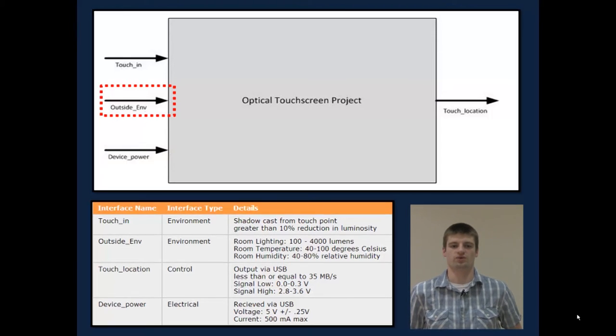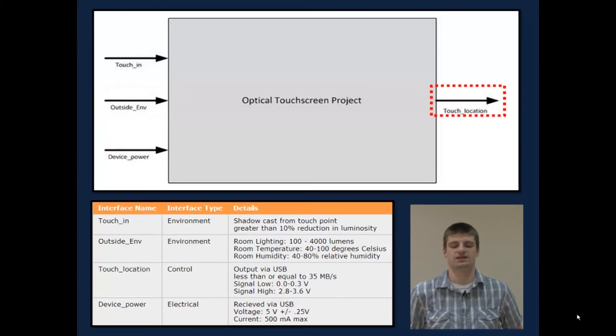The biggest environmental factor will be the lighting, which may interfere with touches and either cause false touches or cause actual touches to be missed. On the back end of our device is the touch location control signal, which will give the computer the necessary data to calculate a touch input.